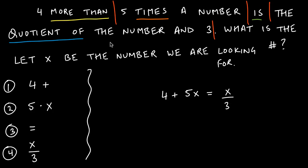Don't try to do too much at the same time. First we define our variable: let x be the number we're looking for. 'Four more than' means I have to do four plus something. 'Five times a number' means 5x. 'Is' just means equals. 'The quotient of a number and three' means x over three. Putting this all together, we get: 4 + 5x = x/3.